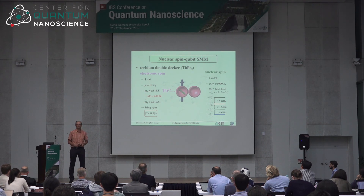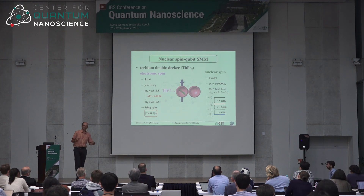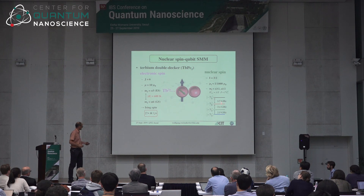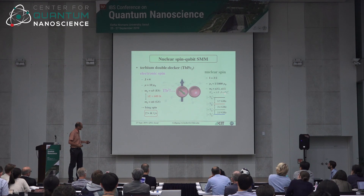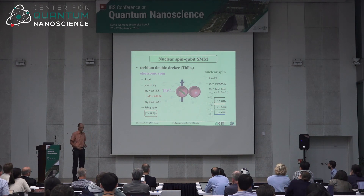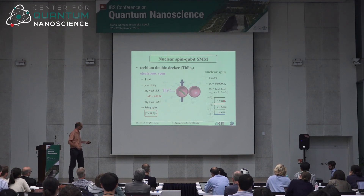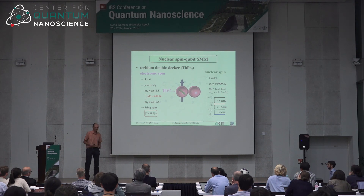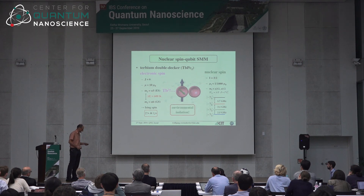We call this a Q-dit because it's not only two levels but four energy levels. This nuclear spin sees the electronic spin and local electric fields, giving rise to a hyperfine coupling — a very strong hyperfine term — and a quadrupole splitting from electric fields that splits the four states of the nuclear spin. We have three different frequencies to address these four different states, and this we are going to use for quantum information processing.